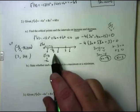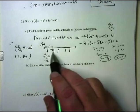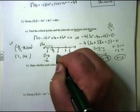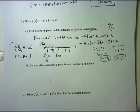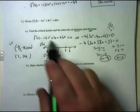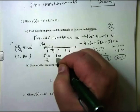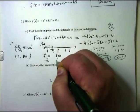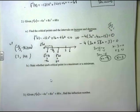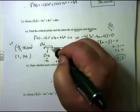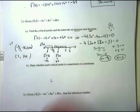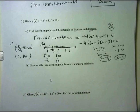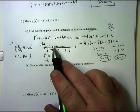Pick a number between -5/3 and 3 — any number will do. I choose 0 because it's the easiest to plug in. When I plug 0 into the derivative equation, I don't need a calculator — I get 60. The sign is positive, which means everybody in that interval has a positive derivative, meaning it's increasing.